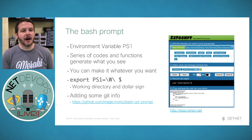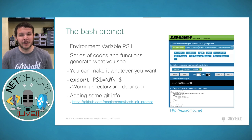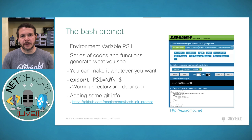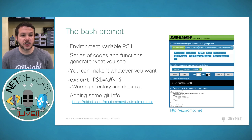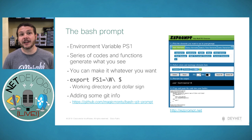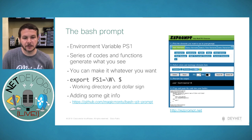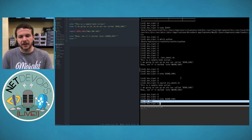The bash prompt itself is controlled by an environment variable called PS1 (or PS2 for multi-line). PS1 is a series of codes and functions that control what your prompt looks like — for example '\w $' shows your working directory and a dollar sign. There are many customization options, and there are online tools where you can build your PS1 interactively.